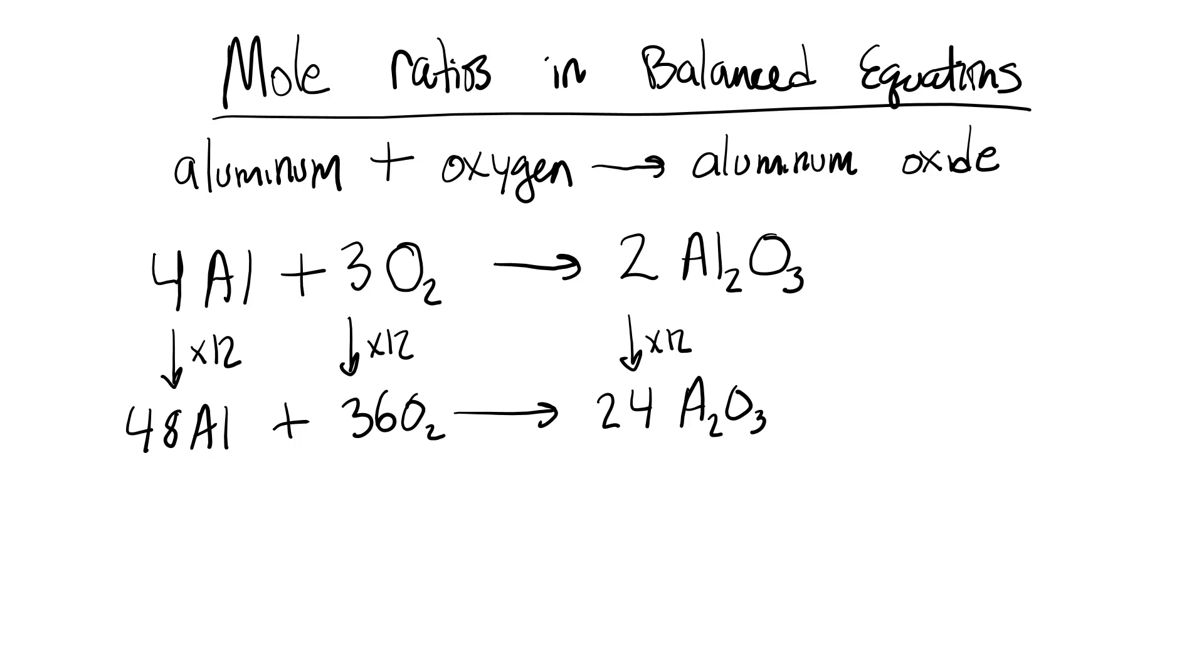Now, what do we call groups of 12? We call that a dozen. So I could say I have 4 dozen aluminum plus 3 dozen O2 makes 2 dozen Al2O3. That just makes logical sense.